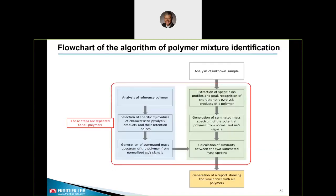This is the flowchart of the algorithm for polymer mixture identification, taken from the publication mentioned before. The left column refers to the steps for generating the reference summated mass spectra library, while the right column refers to processing results obtained for an unknown sample. It is crucial to find the most specific pyrolysis products, which should ideally also have a very high abundance to provide good sensitivity. The retention time indices search window must be defined, and we have programmed and integrated a retention time index generator in our software. The two final steps are the calculation of similarity between the summated mass spectra and finally the report.